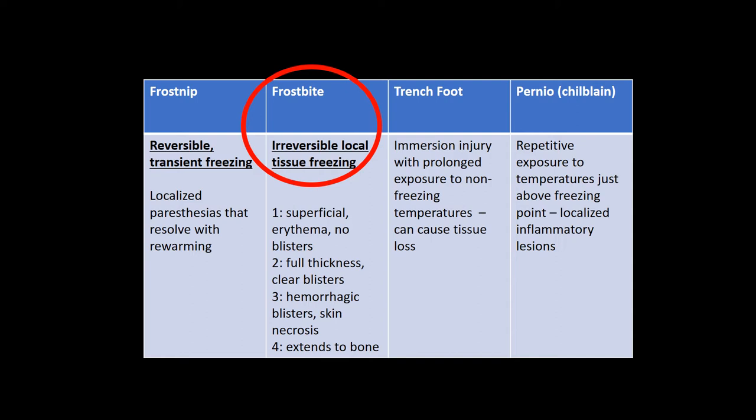Frostnip is reversible transient freezing of the skin with localized paresthesias that resolve with rewarming. Frostbite, on the other hand, is irreversible local tissue freezing with four degrees: first degree is superficial with erythema and no blisters; second degree is full thickness with clear blisters; third degree has hemorrhagic blisters and skin necrosis; fourth degree extends to the bone. Clear blebs are a good prognostic factor; hemorrhagic blebs are bad. Debride clear blisters, leave hemorrhagic ones alone. Treatment for both frostnip and frostbite is rapid rewarming with circulating water at 37–39°C.